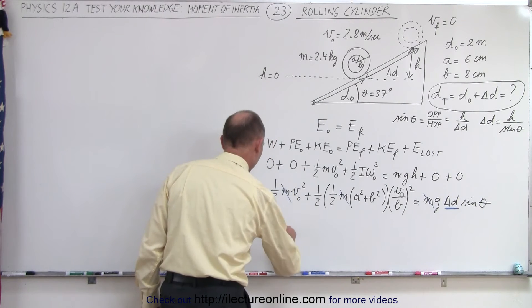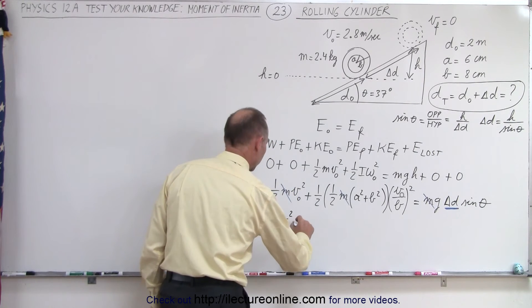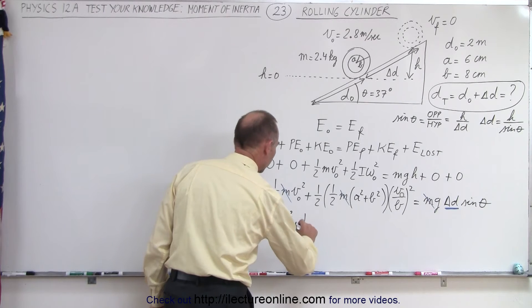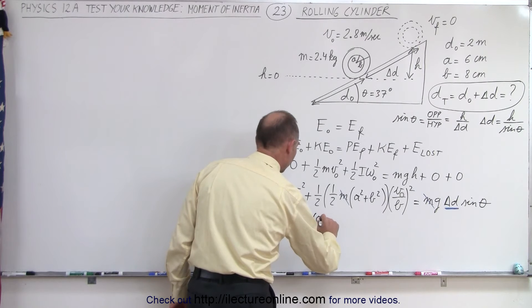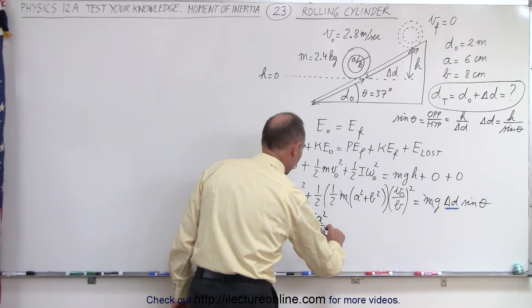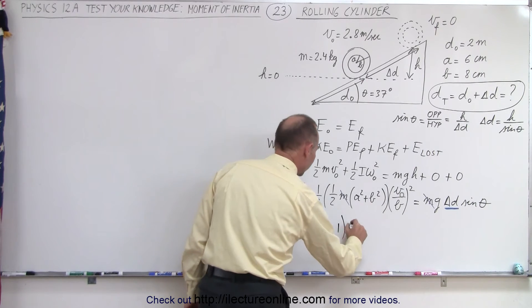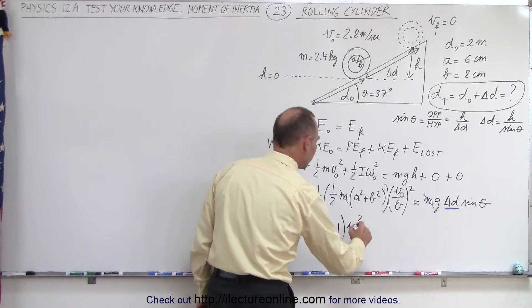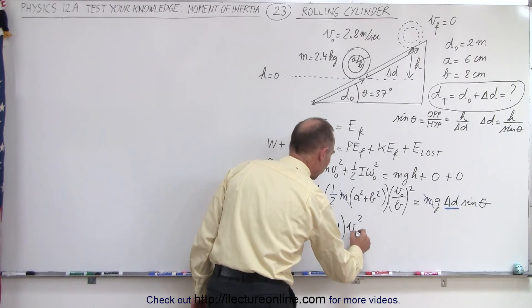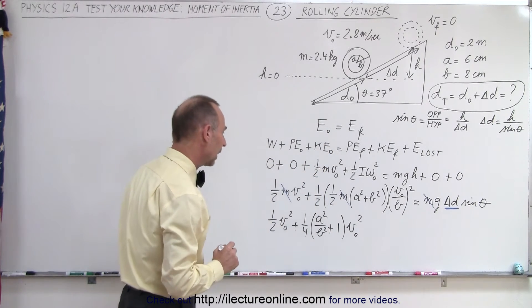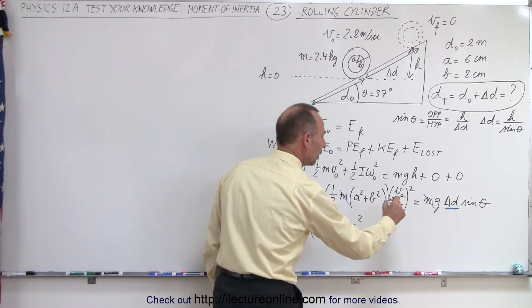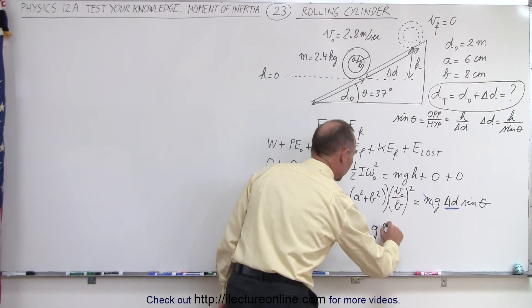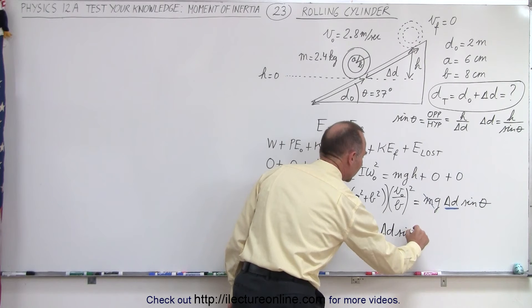we have one-half v-initial-squared plus one-quarter. If we then divide the a-square by b-square, we get a-square over b-squared plus one, because b-square over b-square is one, times v-squared, now of course that will be v-initial-squared. And that will be equal to, on the other side, we end up with g delta d times the sine of theta.